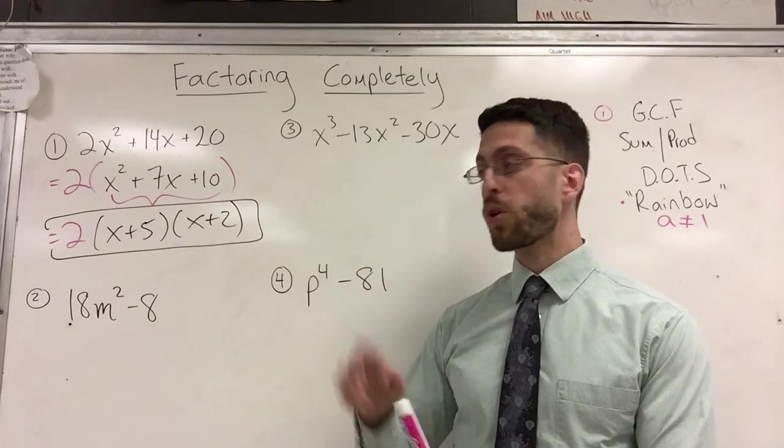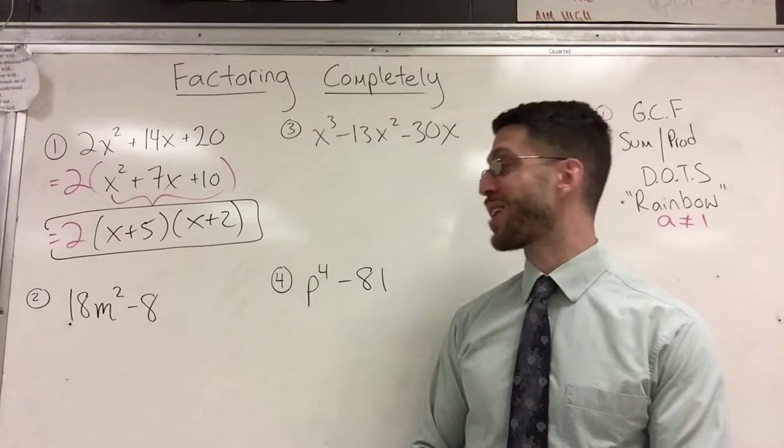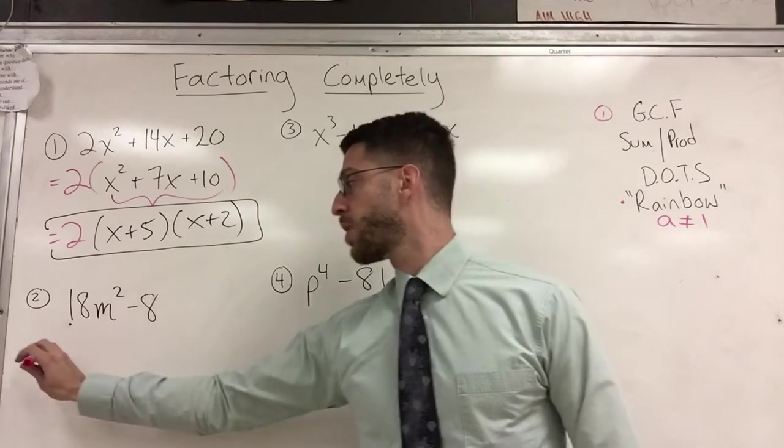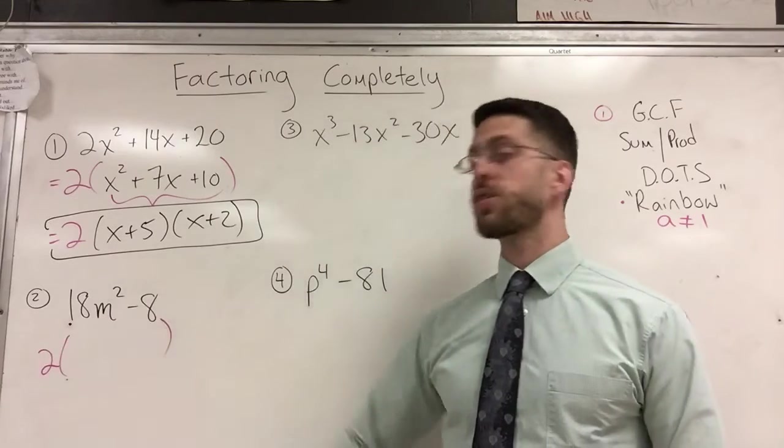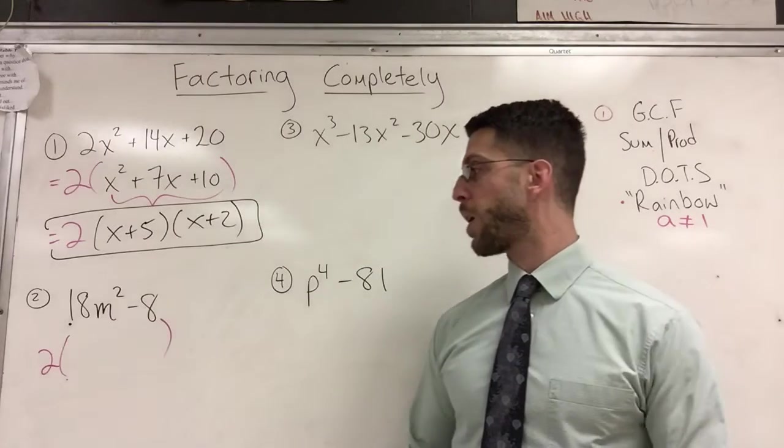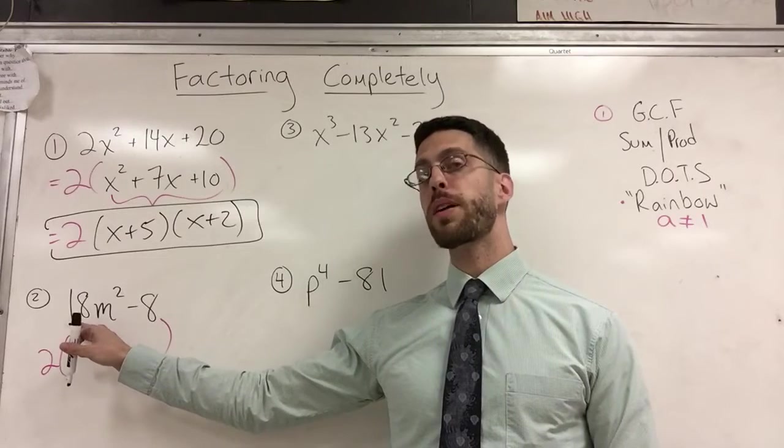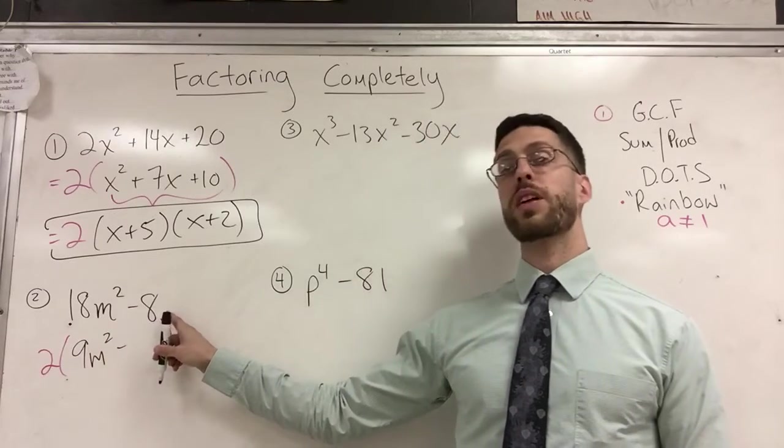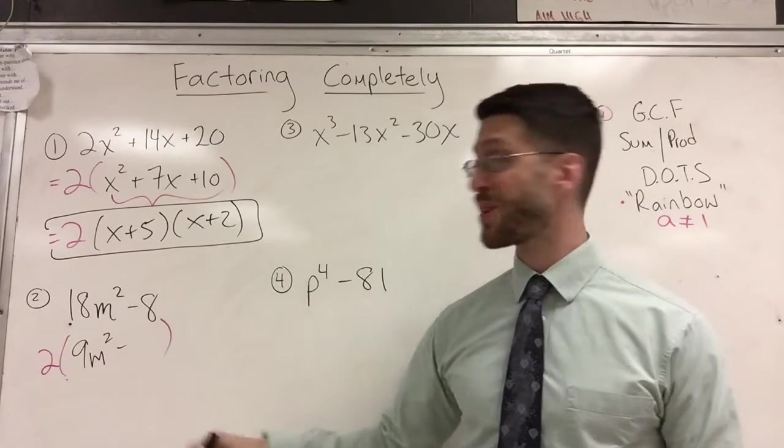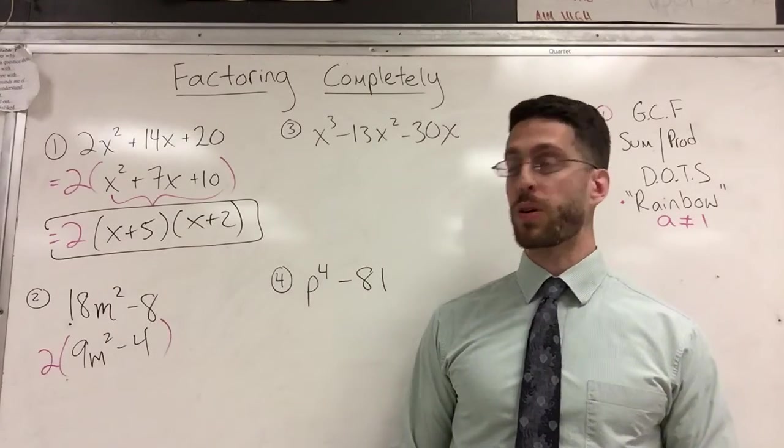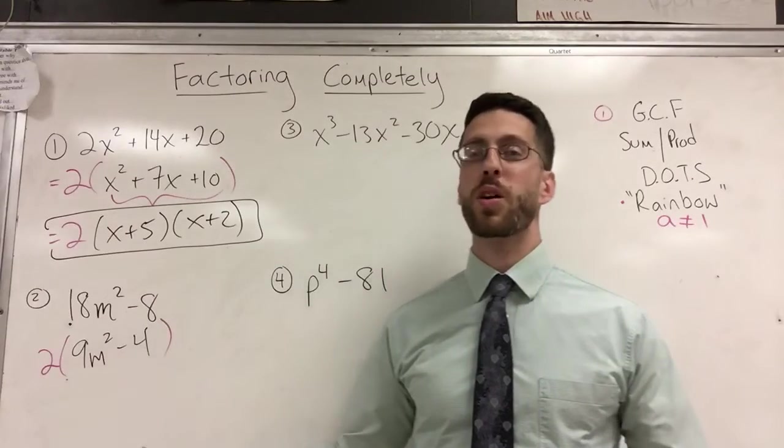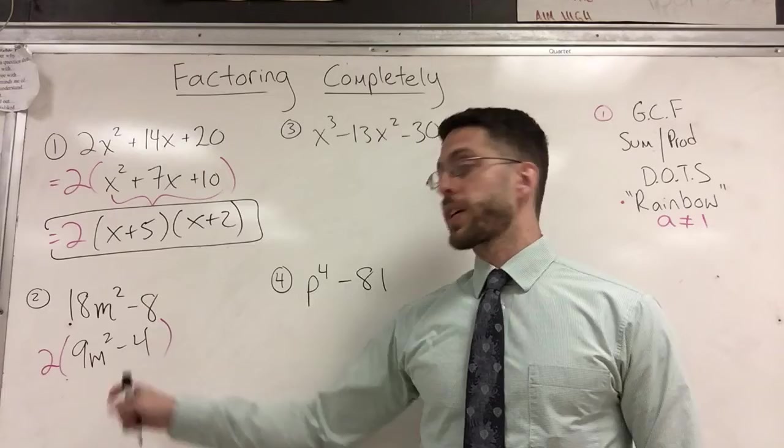It's actually two. Two goes into 8 and two goes into 18. So two is my GCF. All right. If I factor out a two from 18, I'm left with 9M² minus. If I factor out a two from 8, there's the four that I was thinking of earlier. Minus four. Again, it's a coincidence that it happens to be two. It's not always two.